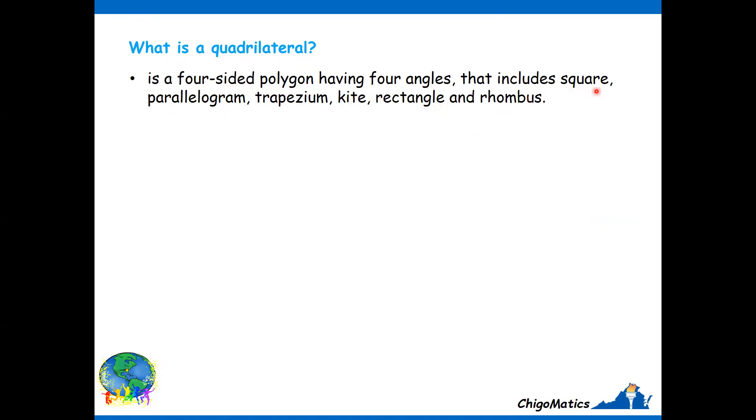A quadrilateral is a four-sided polygon having four angles. That includes square, parallelogram, trapezium, kite, rectangle, and rhombus.